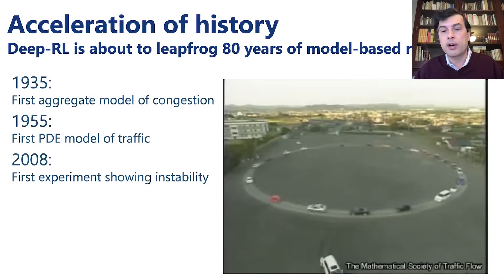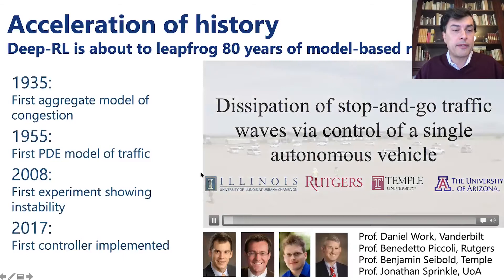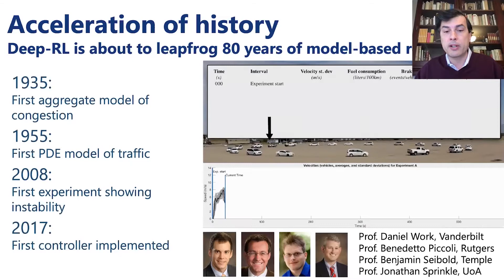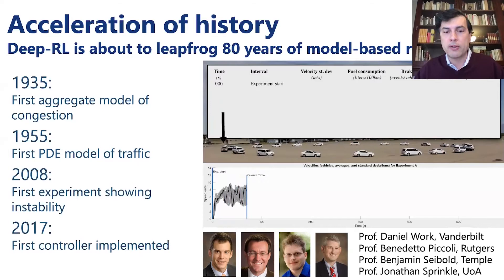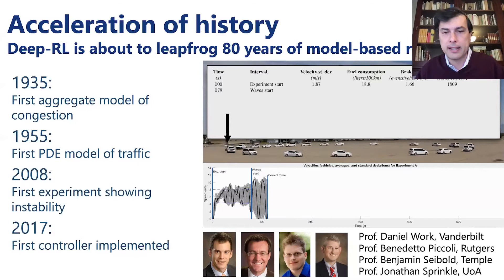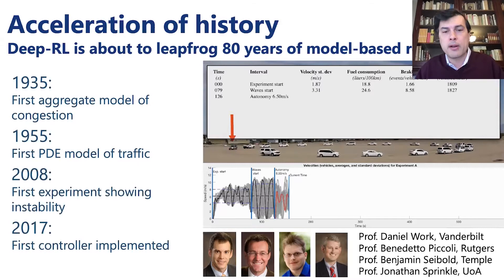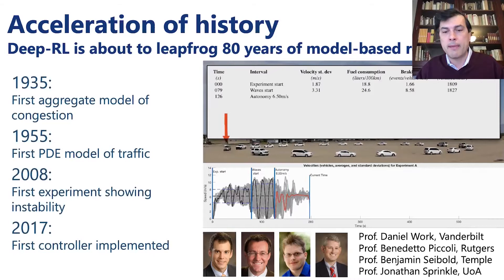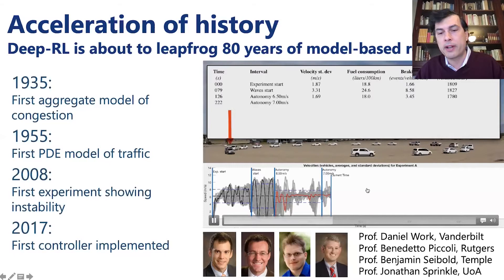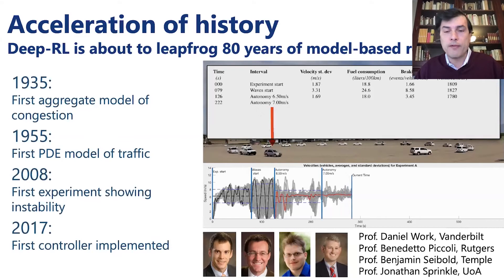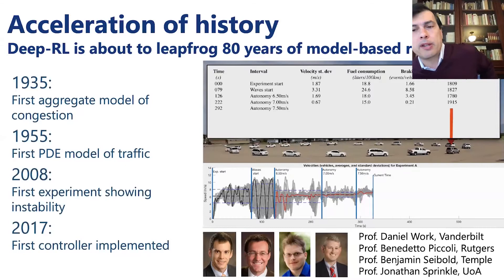Over ten years after that, one of our former students, Dan Work, with Benito Piccoli, Benny Seibold, and John Sprinkle reproduced that same experiment but inserted a self-driving vehicle in the loop. You can see these instabilities when it's just driven by a human, but when the autopilot turns on, the automation manages to smooth the flow and the oscillations are immediately damped. Quite spectacularly, one out of 22 vehicles is enough to smooth the flow, and reading energy consumption from the OBD port gives a 42% reduction in energy.